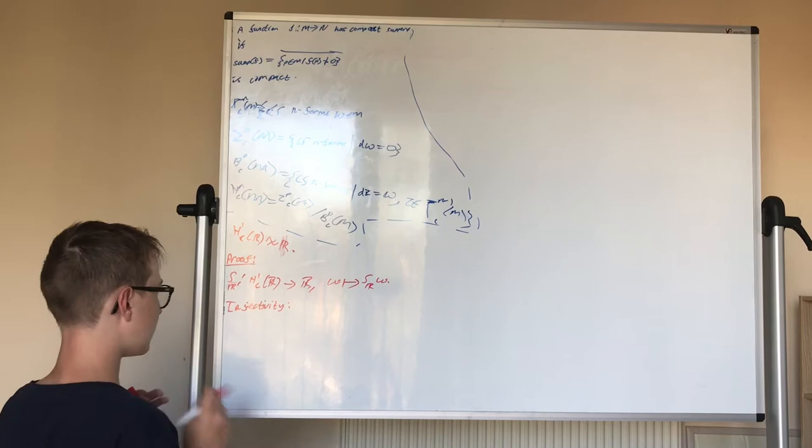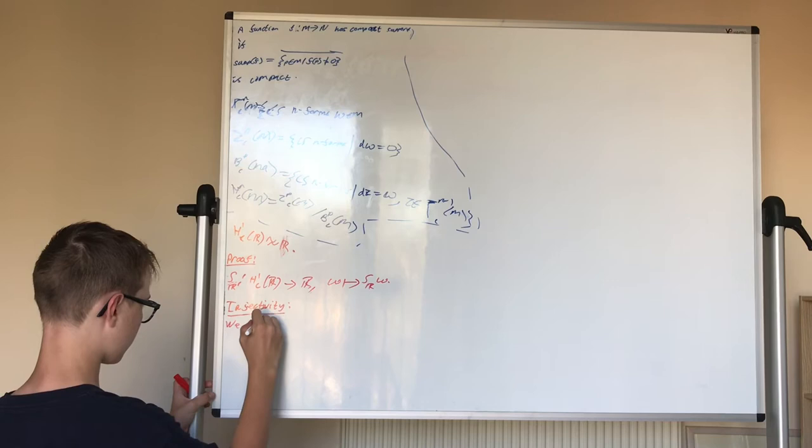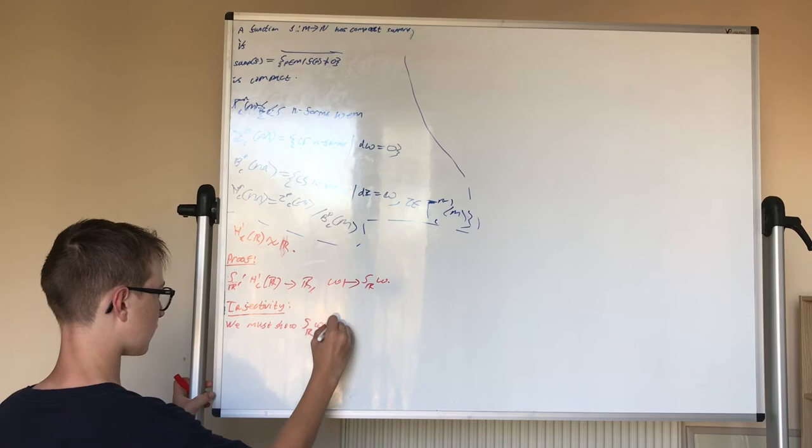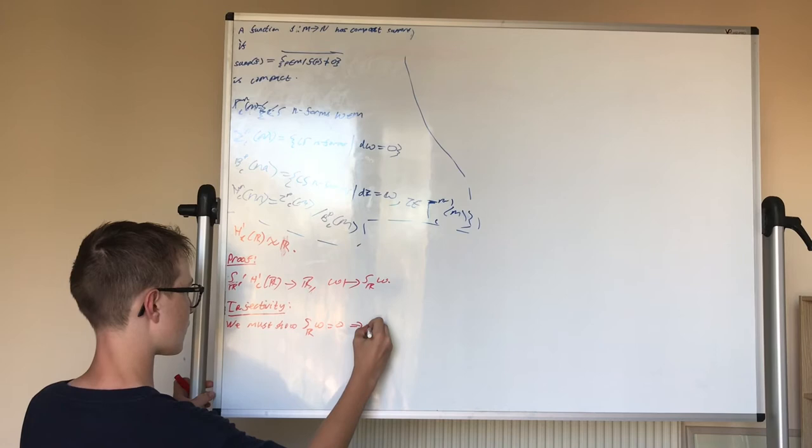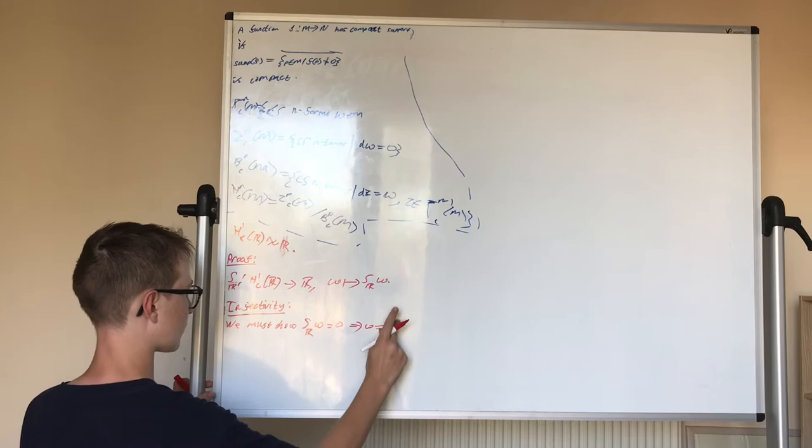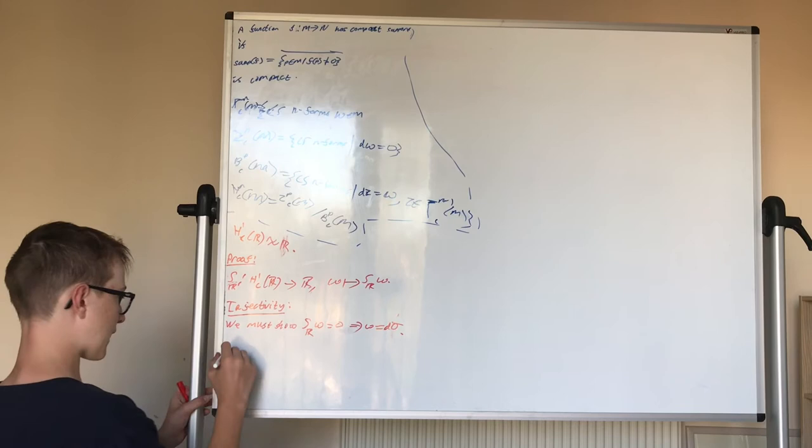And it is well defined, as you can check yourself. Injectivity is as follows. To show that it's injective, we must show that if the integral over R of omega equals zero, this has to happen if omega equals some d sigma. Actually, I'm going to use sigma because that's easier to write. Now, how do we show this?